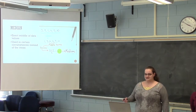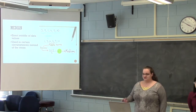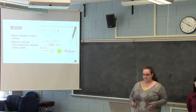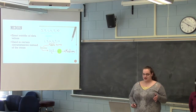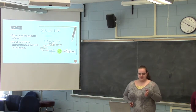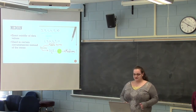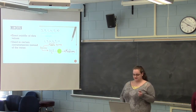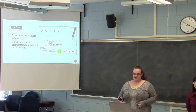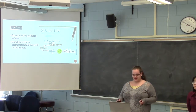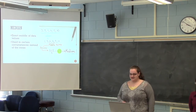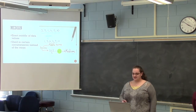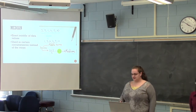Next we have the median, which is the exact middle of your data set. To find the median, you put all of your data points into order — either ascending or descending — and find the middle point. If there's an odd number of data values, the median will be the middle value itself. If there's an even number, it's the average of the two center points. In our example, the average of the two middle points, which are 4 and 5, is 4.5 — so 4.5 is the median. The median is sometimes used when the mean is not the best measure of central tendency.